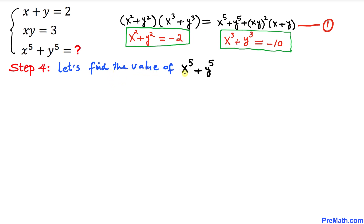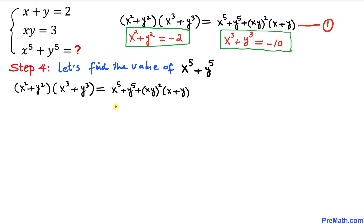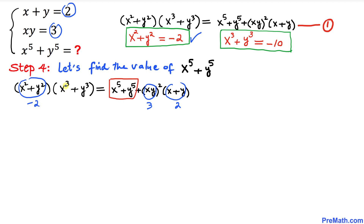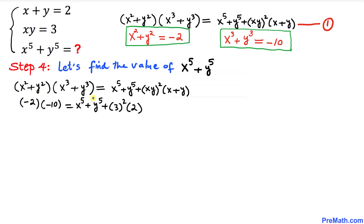Now for the final step, let's find x power 5 plus y power 5 using Equation 1. We substitute: x plus y equals 2, xy equals 3, x square plus y square equals negative 2, and x cube plus y cube equals negative 10 into the equation.